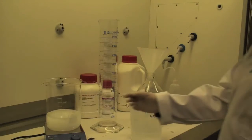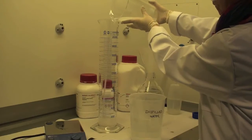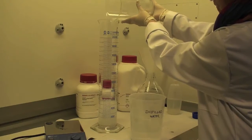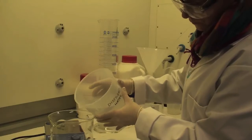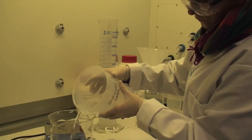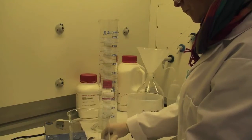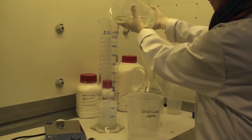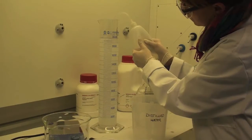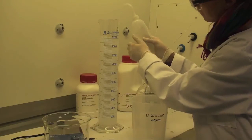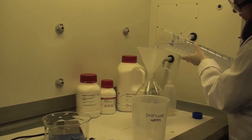Transfer this solution to a 2 liter measuring cylinder. Wash out the beaker with distilled water and then adjust the volume to 2 liters with distilled water. Transfer this into a 2 liter duran bottle. The solution is stable at room temperature for approximately 2 years.